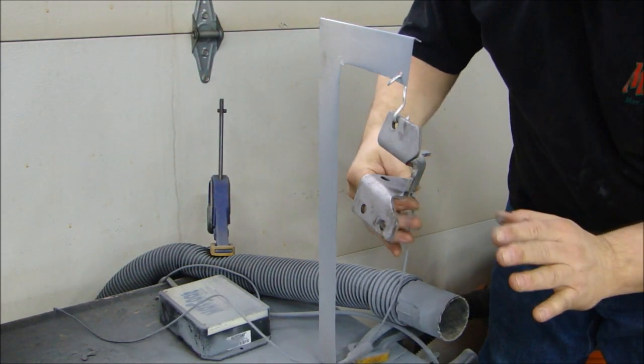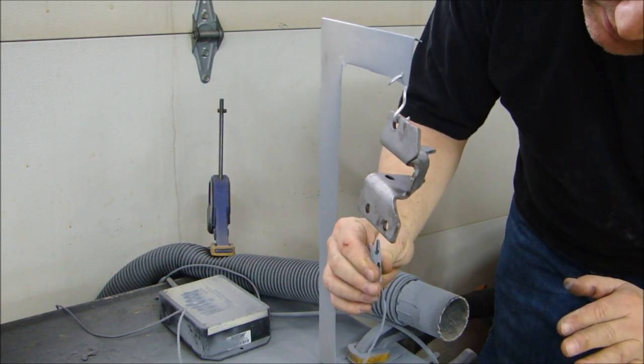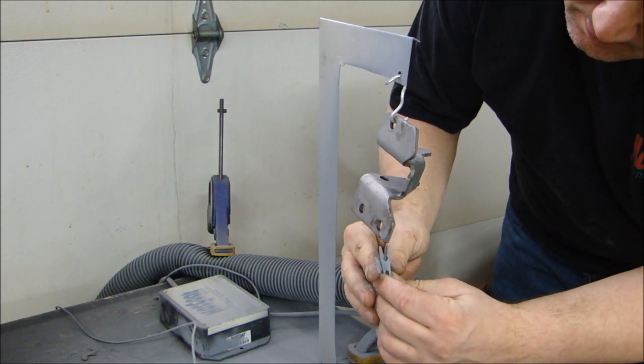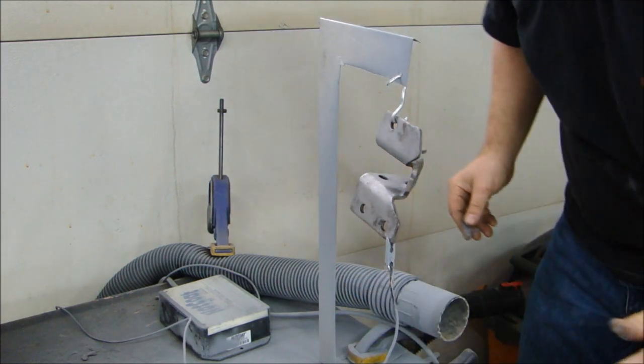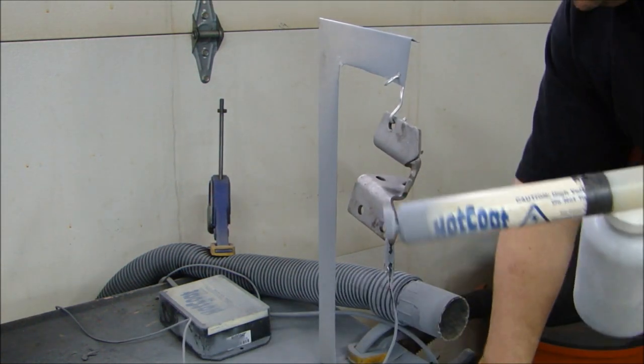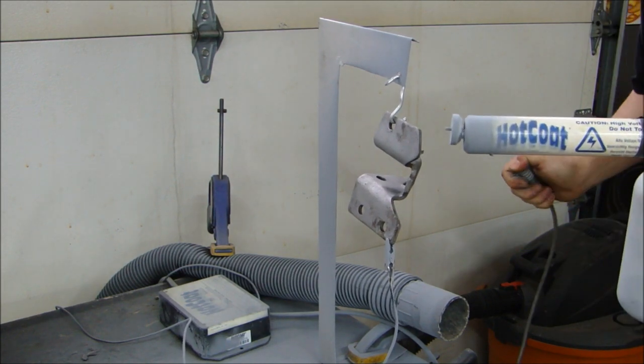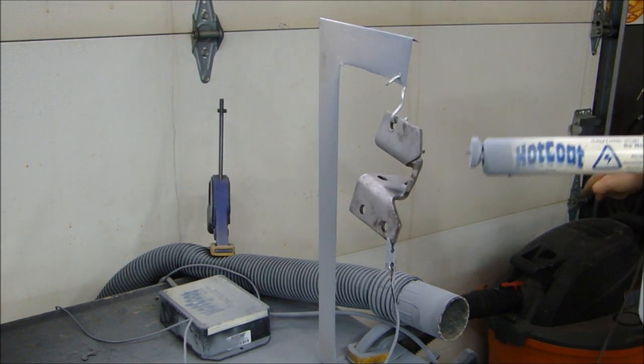I've got my part already sandblasted and cleaned. I hook up the ground clamp on the bottom just to hold it still. I take my gun. This is reflective chrome, it's chrome powder coating. I'm going to turn on my shop vac and powder coat this baby.